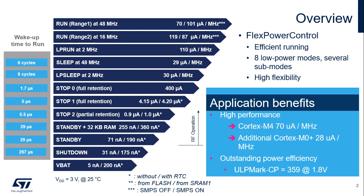STM32WL5 devices support eight main low-power modes: low-power run, sleep, low-power sleep, stop-zero, stop-one, stop-two, standby with RAM retention, standby, and shutdown modes. Each mode can be configured in many ways, providing several additional sub-modes.